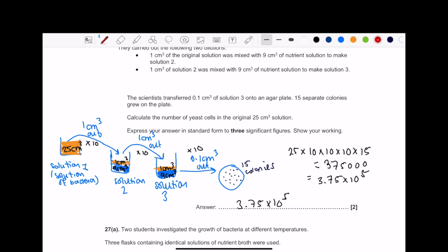Question says, how many yeast cells were there in the original 25 cm³ solution? So from this, we go backwards to find out what was the original number of bacteria in solution 1.